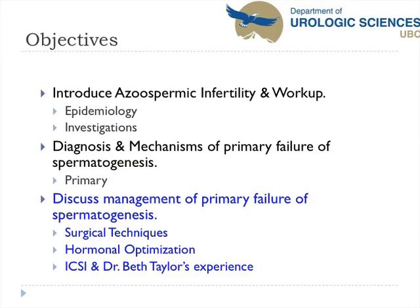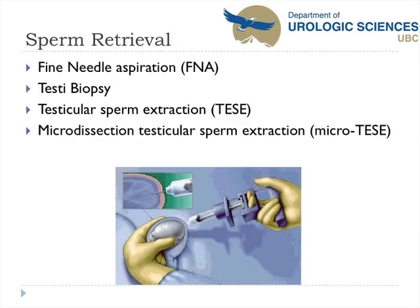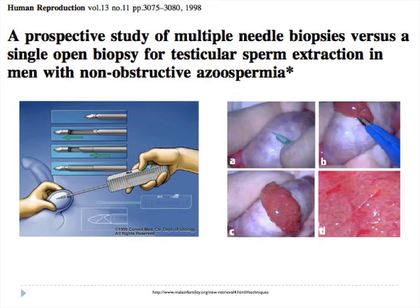Shifting to management options: to retrieve sperm from an azoospermic patient, options include fine-needle aspiration, testicular biopsy, testicular sperm extraction (TESE), and microdissection testicular sperm extraction (micro-TESE). Fine-needle aspiration has not been particularly successful for getting sperm from the testes. Testicular biopsy includes percutaneous biopsy and the TESE procedure, which involves a transverse incision in the testicle to visualize the seminiferous tubules.